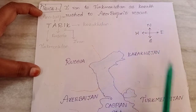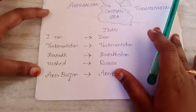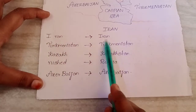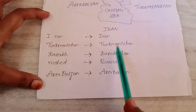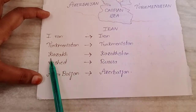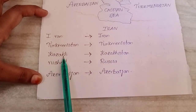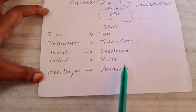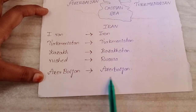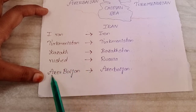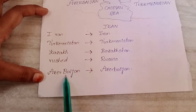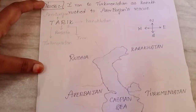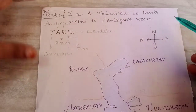In the sentence: 'I ran to Turkmenistan as Kazakh rushed to Azerbaijan's rescue' — 'Iran' comes from Iran, 'Turkmenistan' is Turkmenistan, 'Kazakh' is the person from Kazakhstan, 'rasht' sounds like Russia, and 'Azerbaijan' — I used 'Azer' as a name and 'baijan' meaning brother — is the country Azerbaijan.